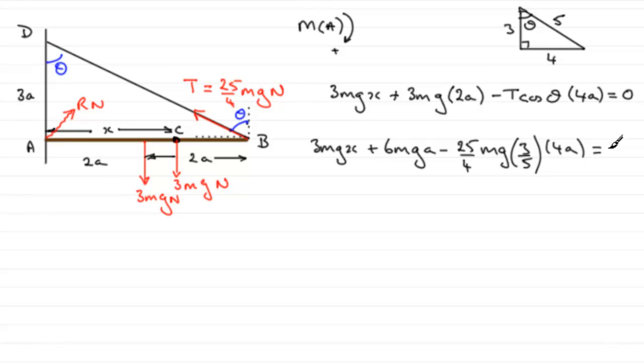Every term has an mg in it, so we can cancel that out. There's any other thing we can do? Yeah, we can cancel 4 into 4, and we can cancel the 5s: 5 into 5 goes 1, 5 into 25 goes 5 times.